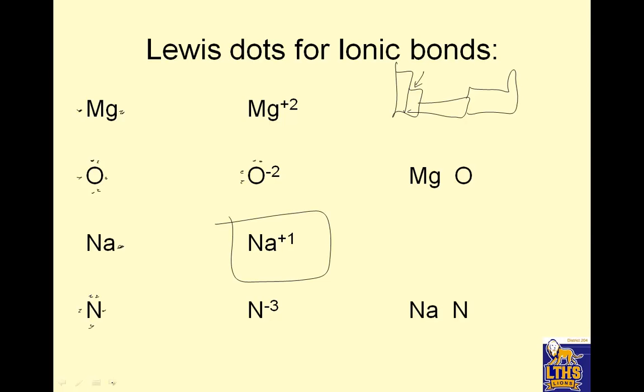Nitrogen is in the fifth column. The periodic table tells us the number of valence electrons. N-3 would have eight. I think I messed up on my oxygen by not giving it eight. O has the eight, and these are attracted to each other because +2 and -2. This is -3 and +1, and they're attracted by those charges.